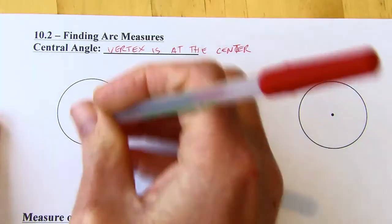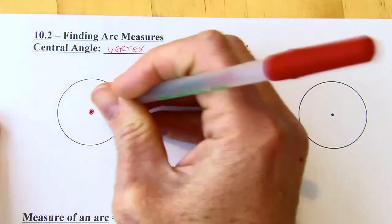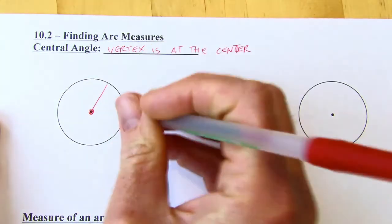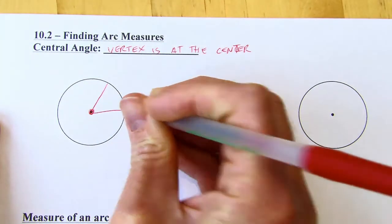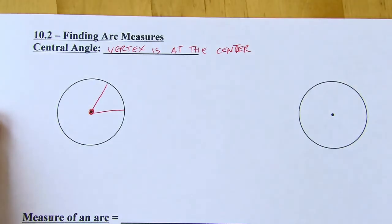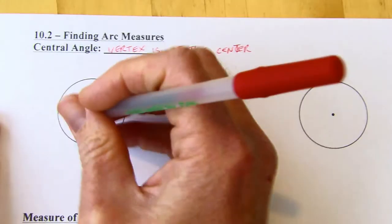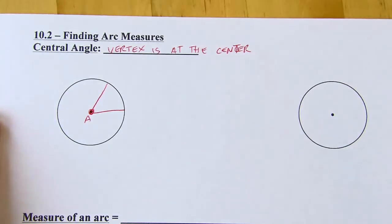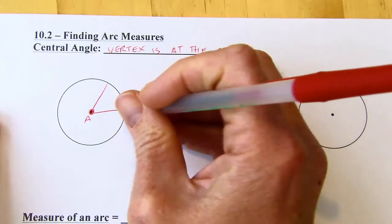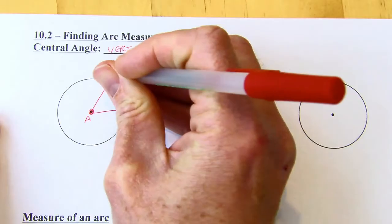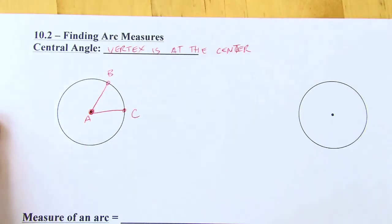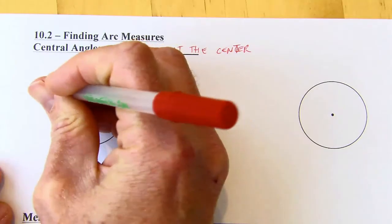So if I'm using this circle right here, then a central angle might look something like that. That is a central angle. So I could say angle A is a central angle. I'm going to call these points B and C, and then I'm going to put point D somewhere out here.